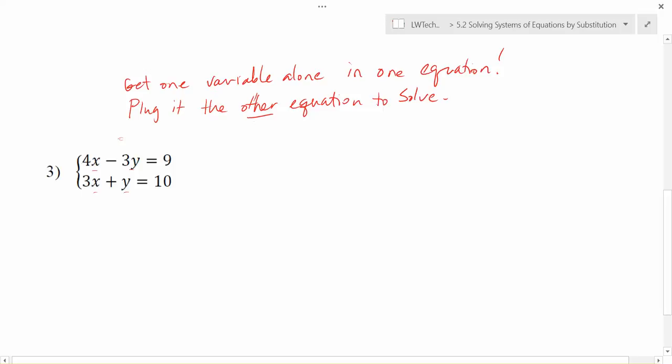Notice, for example, if you got the x alone in the top equation, we'd have to add 3y to each side and then divide by 4 on each side. That's going to lead us to be doing quite a bit of work with fractions. And so just as a recommendation, if it's ever possible, where you have a variable that's almost by itself, like in this case the y, there's no coefficient in front of it, I would try to get this y by itself in the second equation alone because it's going to avoid some fraction work.